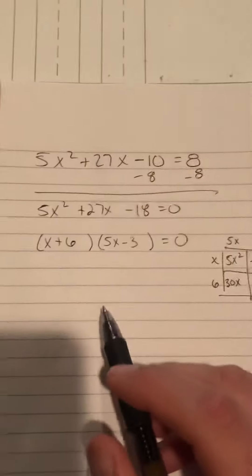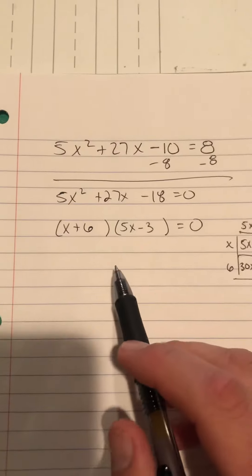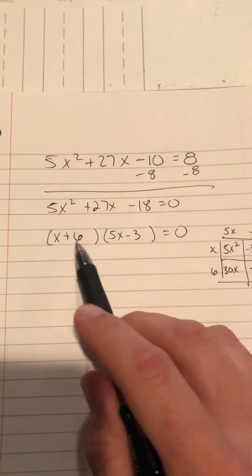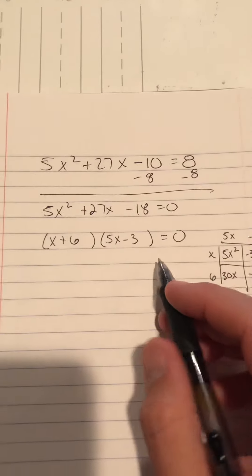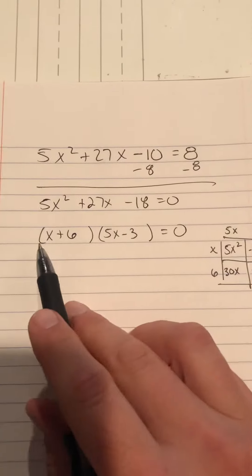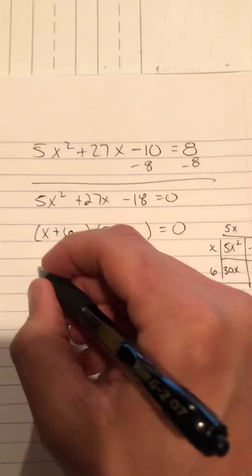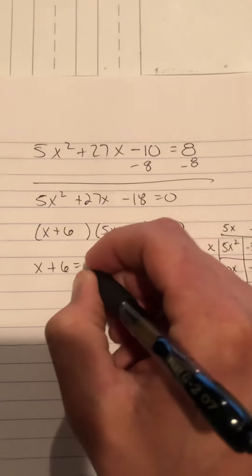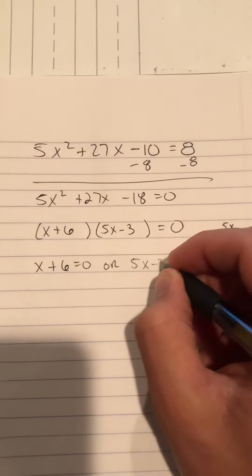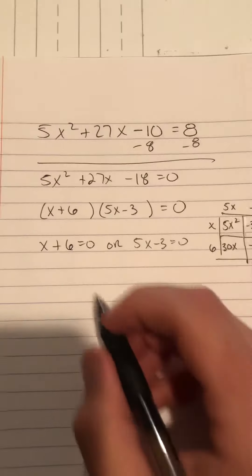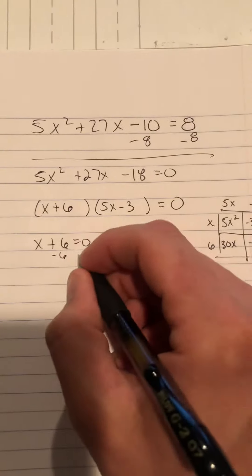So I have successfully completed step 3, which is to factor the trinomial and now set equal to 0. Excuse me, that was step 2, factor the trinomial. Step 3 is now to set each piece equal to 0. So I will do that, and I will solve the simple equations.